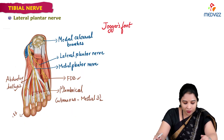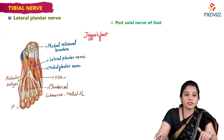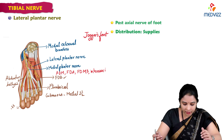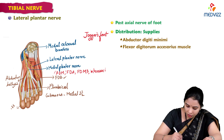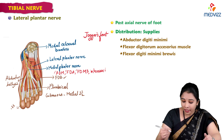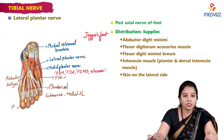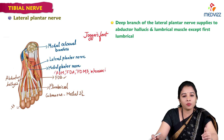The lateral plantar nerve is the post-axial nerve of the foot, whereas the medial plantar nerve is the pre-axial nerve. The lateral plantar nerve supplies abductor digiti minimi, flexor digitorum accessorius, flexor digiti minimi brevis, and the interossei — both plantar and dorsal interossei muscles. It also supplies the skin on the lateral side. The deep branch of the lateral plantar nerve further supplies adductor hallucis and the lumbricals.